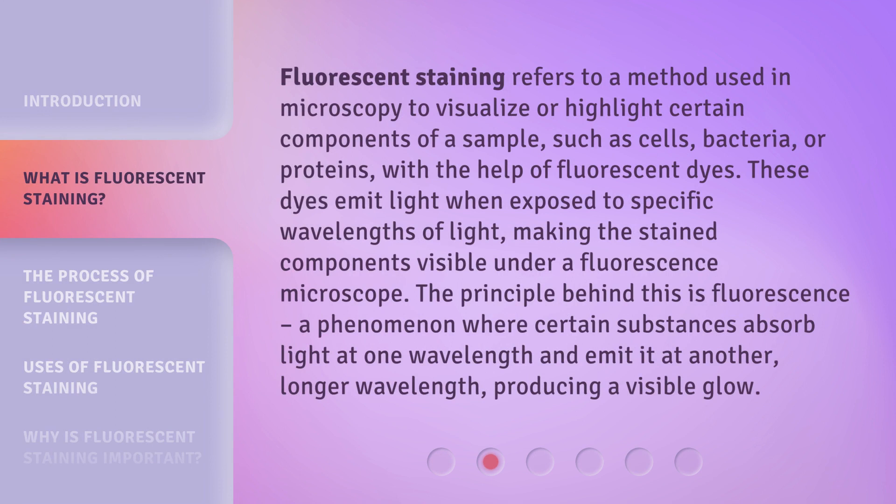Fluorescent staining refers to a method used in microscopy to visualize or highlight certain components of a sample, such as cells, bacteria, or proteins, with the help of fluorescent dyes. These dyes emit light when exposed to specific wavelengths of light, making the stained components visible under a fluorescence microscope.